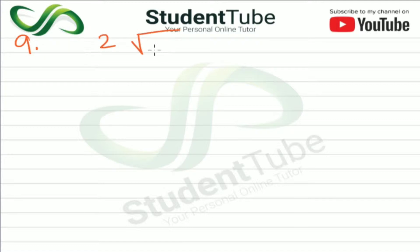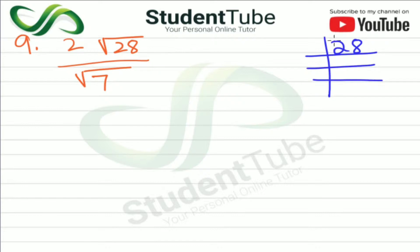2 under root 28 upon under root 7. So let's take the first 28 LCM here. So here we have 28. So 2 1's are 2 and 2 4's are 8, then 2 7's are 14 and 7 1's are 7. Now here will come 2 under root